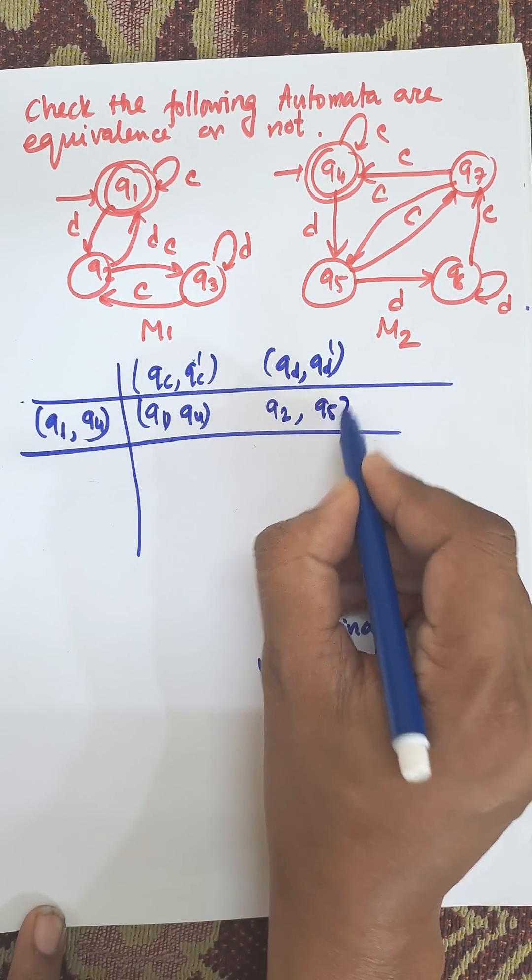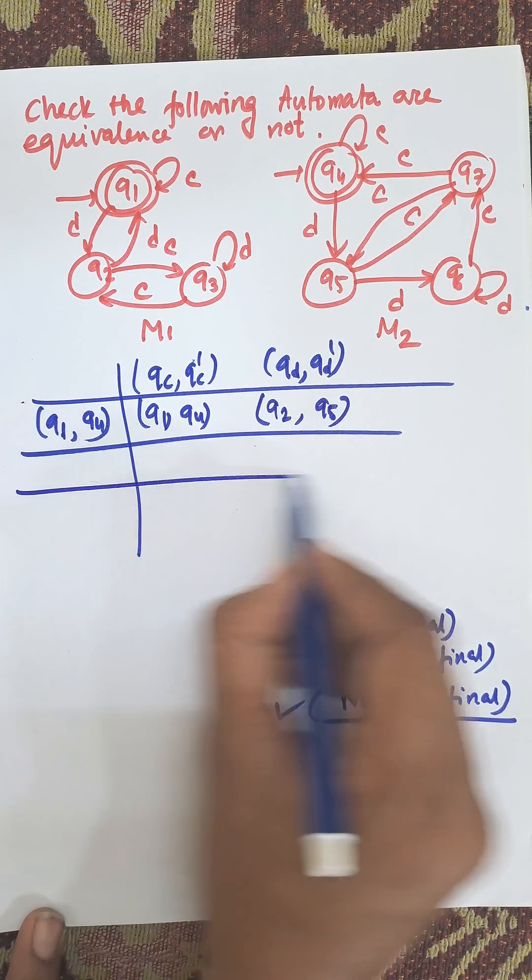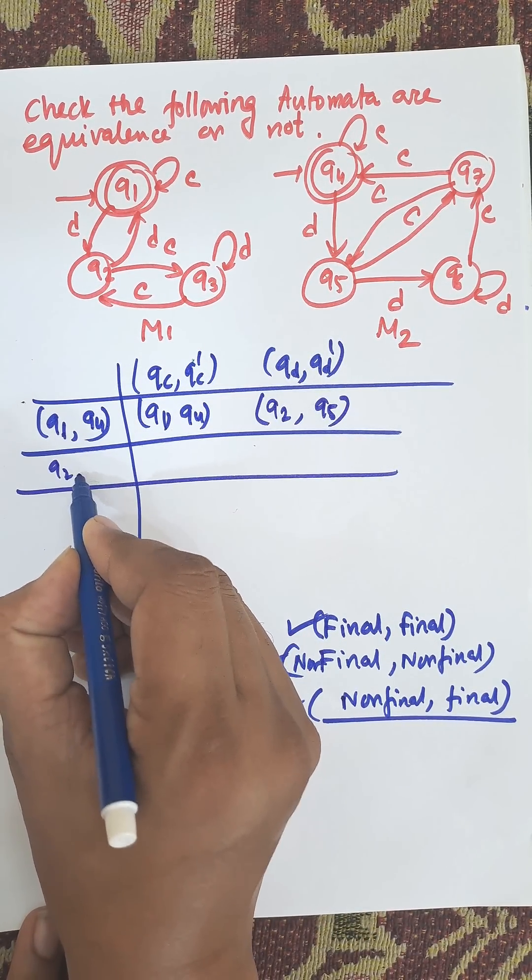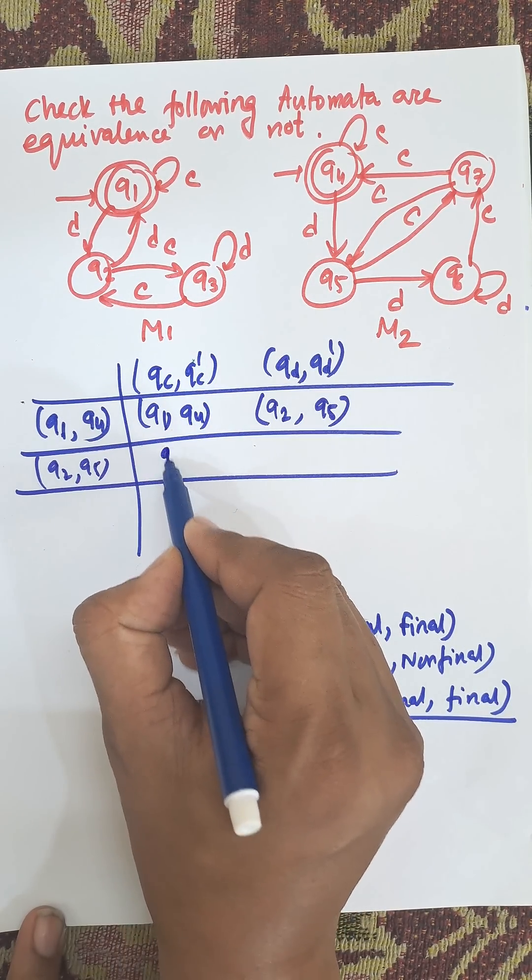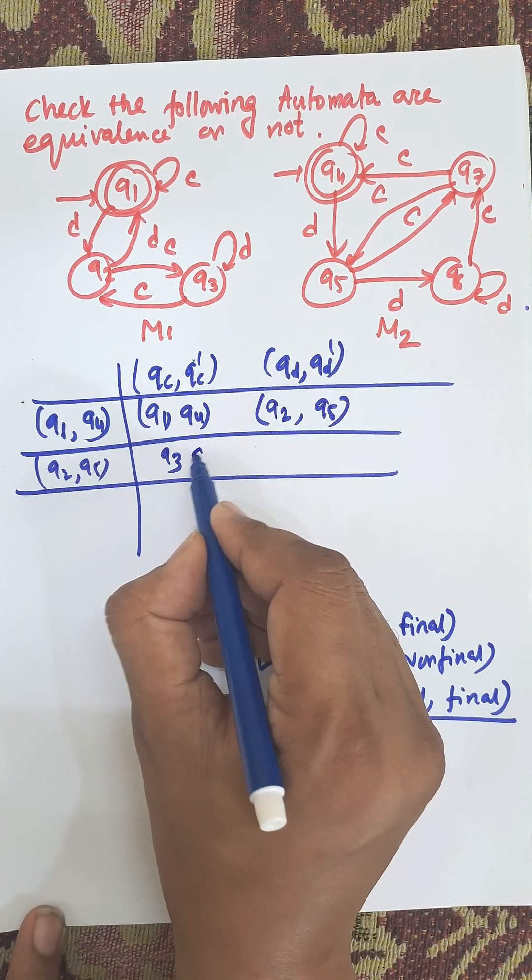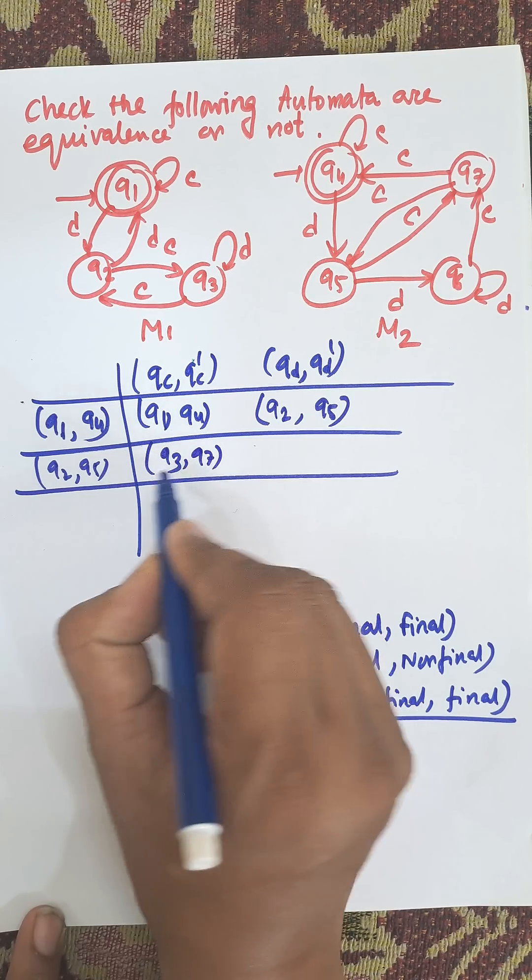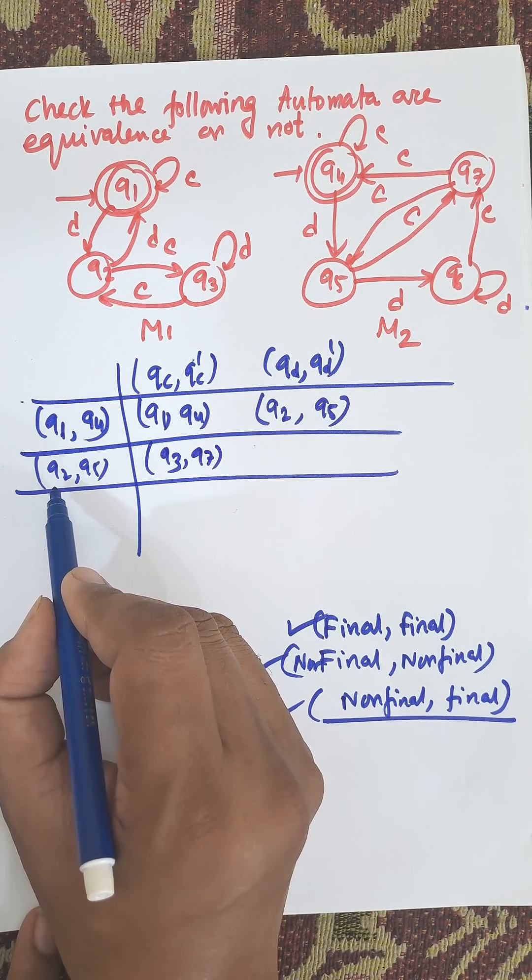Now write down this Q2 to Q5. From Q2 to C, this is Q3. Q5 to C, this is Q7. They are non-final state. From Q2 to D, Q2 to D, this is Q1. Q5 to D, Q5 to D, this is Q6.